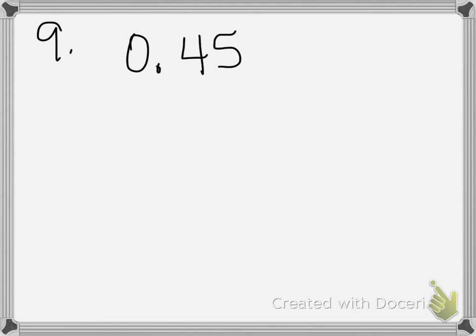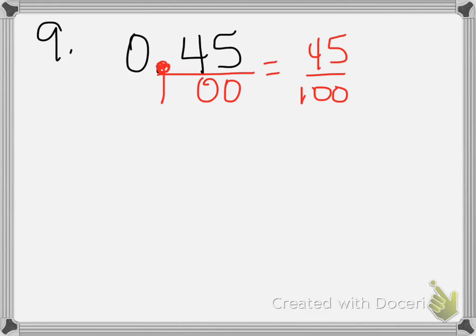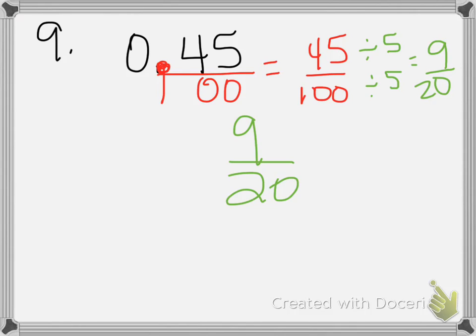For number 9, the directions are 'write each decimal as a fraction or mixed number in simplest form.' For 0.45, we use the lollipop method — draw the stick and put zeros under each digit to the right of the decimal — giving 45/100. But remember the caveat: simplest form. Divide both by 5 and you get 9/20. Your final answer is 9 twentieths.